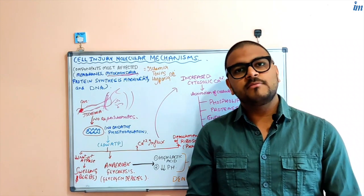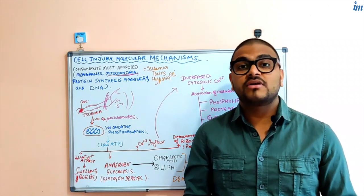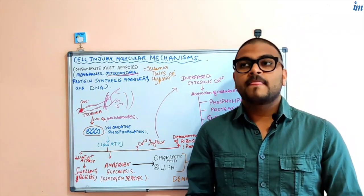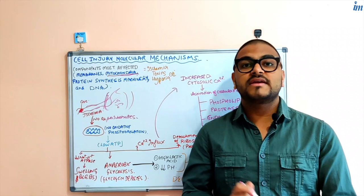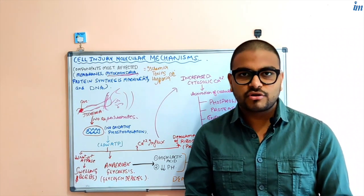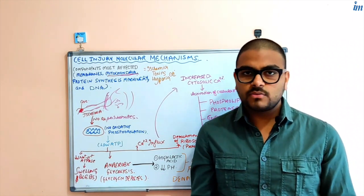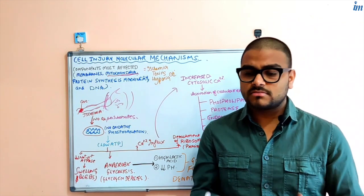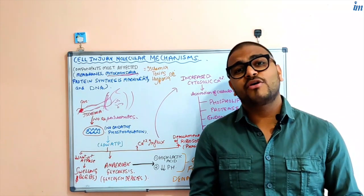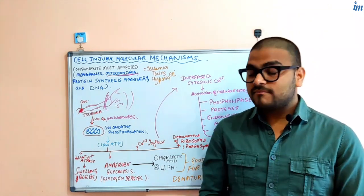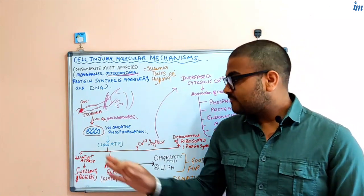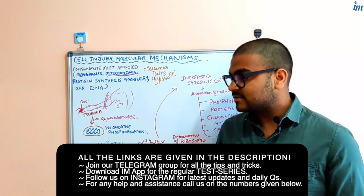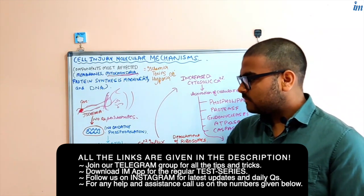First of all, in relation to oxygen, the first organelle that is going to be affected is mitochondria. In mitochondria, there is a very important process going on called oxidative phosphorylation. Why do we need that process? That process of oxidative phosphorylation is needed for the production of ATP.